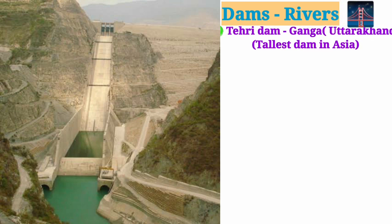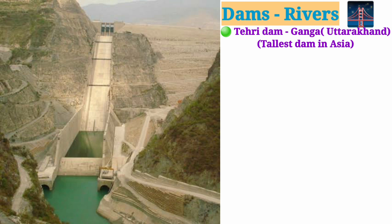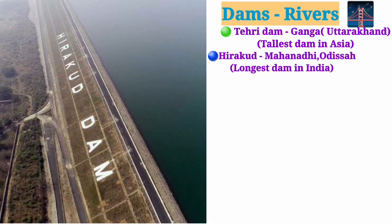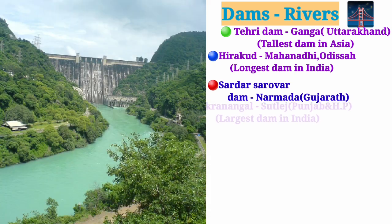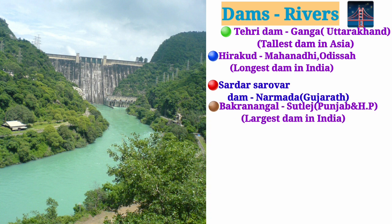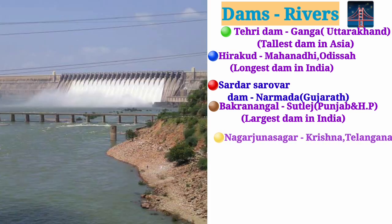Important dams in India: Tehri Dam, built on the Ganga in Uttarakhand — this is the tallest dam in Asia. Hirakud Dam, built on the Mahanadi in Odisha — this is the longest dam in India. Sardar Sarovar Dam, built on the Narmada in Gujarat. Bhakra Nangal Dam, built on the Sutlej, belonging to Punjab and Himachal Pradesh — this is the largest dam in India. Nagarjuna Sagar Dam, built on the Krishna in Telangana.